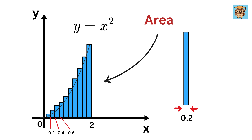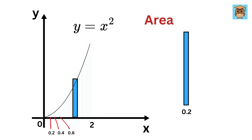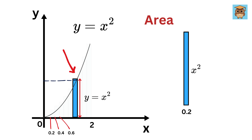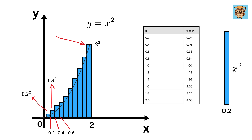Now, in order to calculate the area of these rectangles, we need base and height. The base is 0.2, so we only need the height. The height of these rectangles is the Y value of this parabola, and that Y value is equal to X squared. So the height at X equals 0.2 will be 0.2 squared, at X equals 0.4 it will be 0.4 squared, and so on up to 2 squared. I have made a table of X values and their respective Y values.